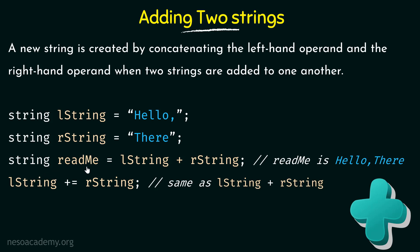and then I have another string called rstring which is also assigned a literal value there. I am defining another string called readme and to this I am adding lstring plus rstring. These two strings are concatenated, so whatever is on the left hand side of plus, that is hello, would be put first, and then on the right hand side we have rstring which contains there. So readme would contain the concatenation of lstring plus rstring, which is hello comma there. Next, we also have lstring plus equal to rstring, which is the same as lstring equals lstring plus rstring — the concatenation is stored inside lstring. That is another way of representing the addition.